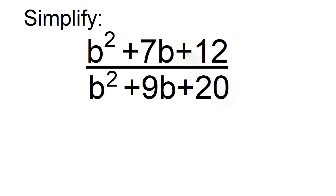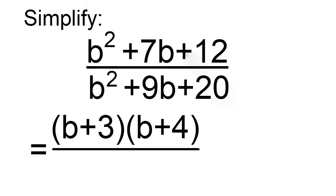Test your skills in factoring polynomials by simplifying b squared plus 7b plus 12 over b squared plus 9b plus 20. b squared plus 7b plus 12 is a general trinomial with a equals 1. To factor, think of two numbers that will give you a product of 12 and a sum of 7. The factors are b plus 3 and b plus 4.